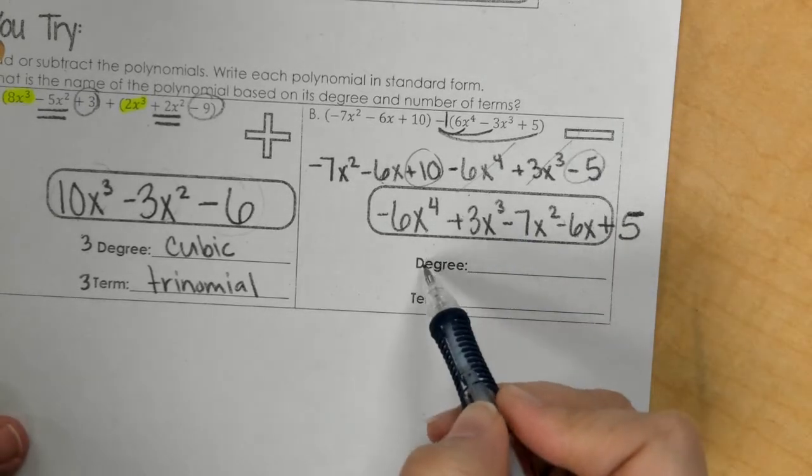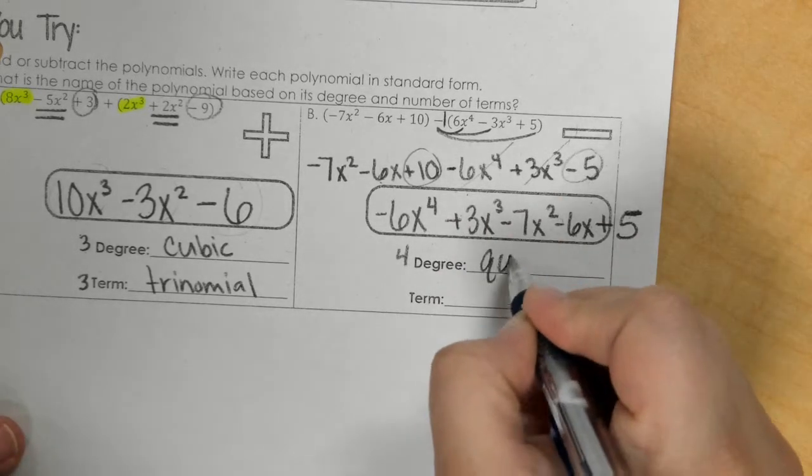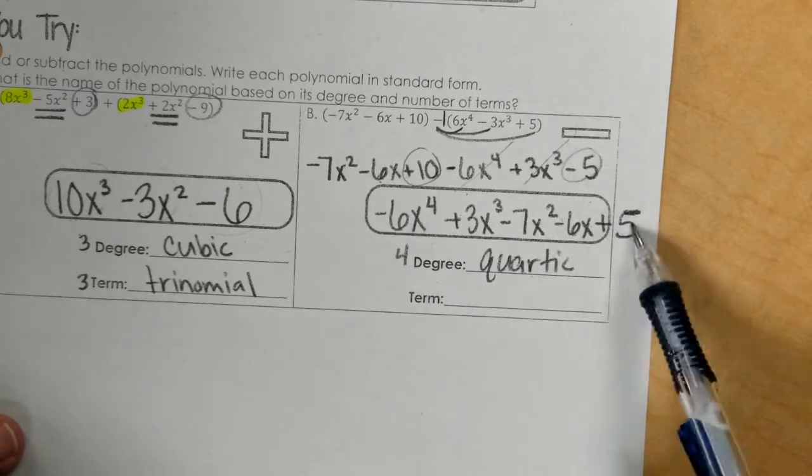So by degree, the exponent is a 4. Okay, 4 is a quartic. And we have 1, 2, 3, 4, 5 terms.